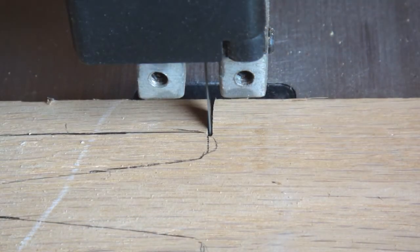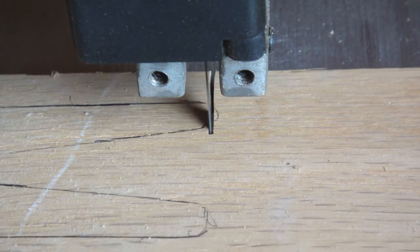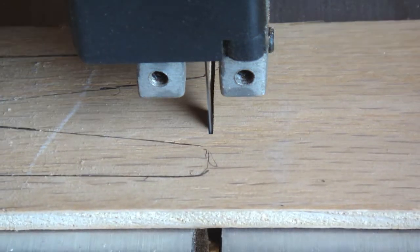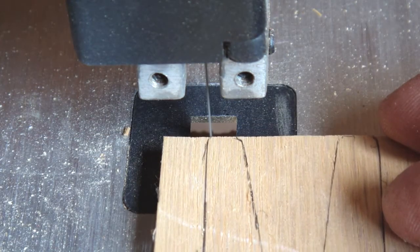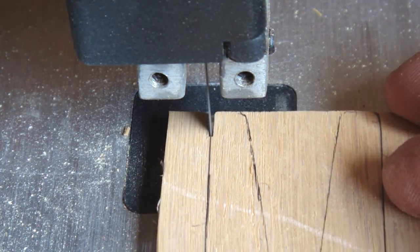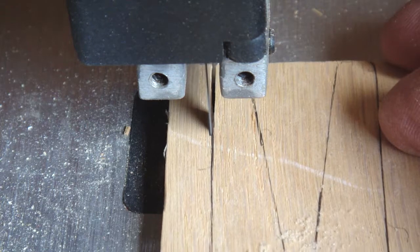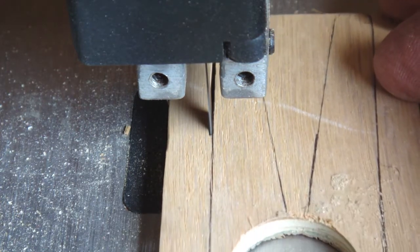A narrow-bladed bandsaw or jigsaw can be used to make short order of cutting the profiles. Obviously, keep your fingers out of the path of a power saw blade. Otherwise, your project might be indefinitely delayed.